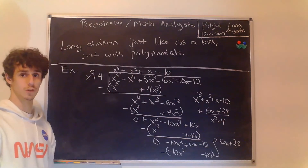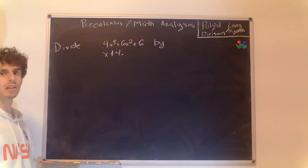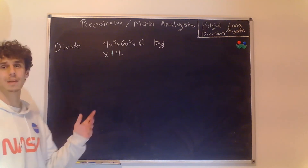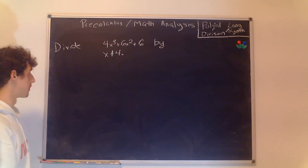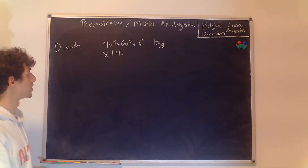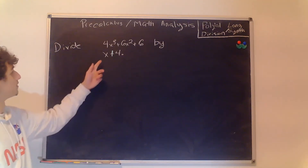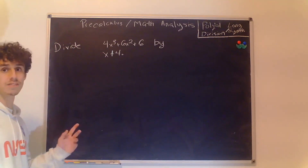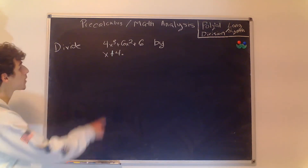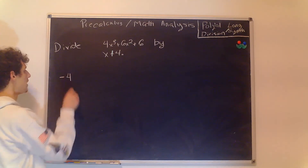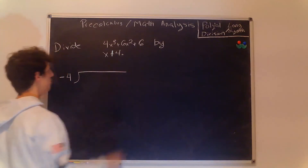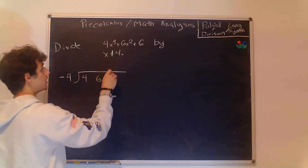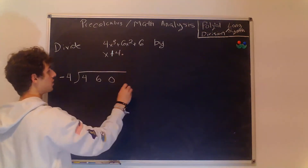Let's move on to synthetic division. Synthetic division is essentially long division made a little simpler using the coefficients. Here we have 4x cubed plus 6x squared plus 6, divided by x minus 4. We'll put our negative 4 out here, and inside our synthetic division bar we'll have our coefficients: 4, 6, 0 — because there's no x term — and 6.